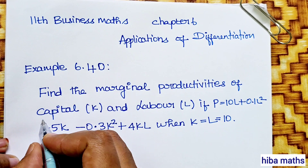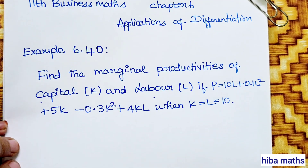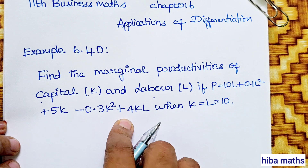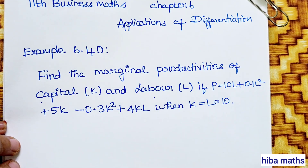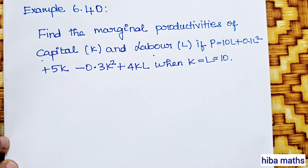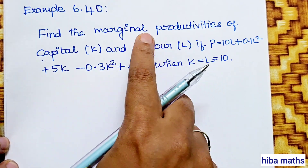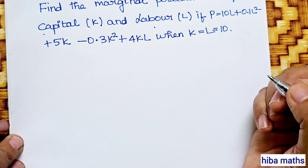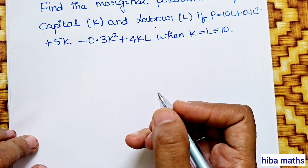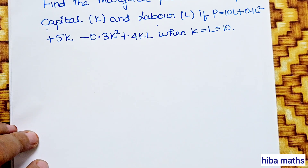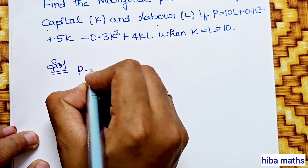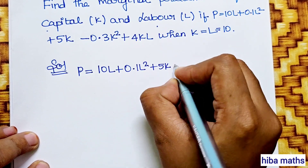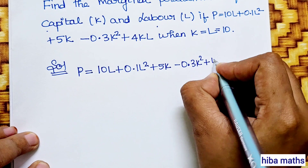Find the marginal productivity of capital and labor. Capital is K, labor is L. If P is equal to 10L plus 0.1L square plus 5K minus 0.3K square plus 4KL, when K is equal to L is equal to 10. We can get the P value. Marginal productivity: doh P by doh L, doh P by doh K — these are partial derivatives. We can substitute K value and L value. Solution first is given: 10L plus 0.1L square plus 5K minus 0.3K square plus 4KL.